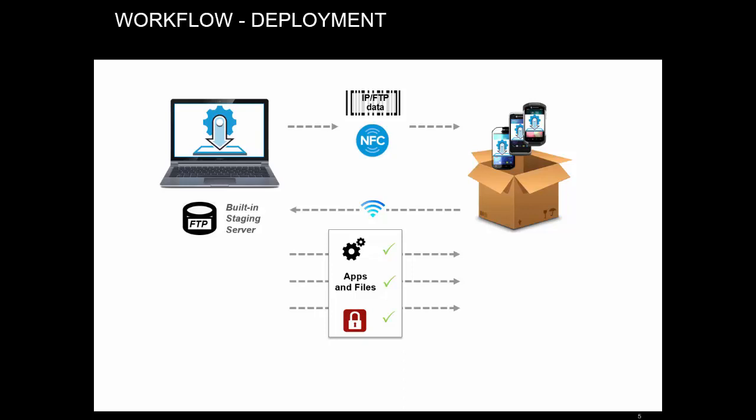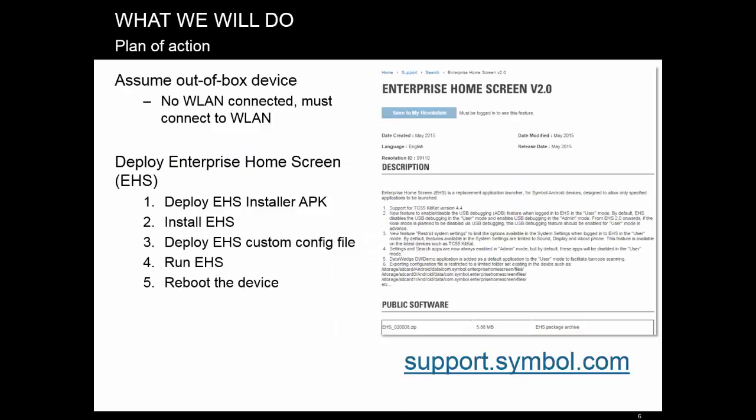That's pretty much all you need to know before moving to the practical part of this episode. Our application of choice will be Enterprise Home Screen, EHS, which can be downloaded for free from support.symbol.com. We assume that the device is fresh out of the box, so for any file downloads, it needs to be connected to a WLAN to have access to the Stage Now server. In order to get EHS installed on the device properly, the device needs to do the following.